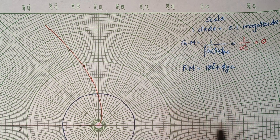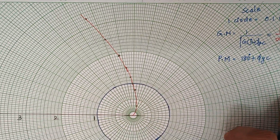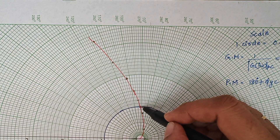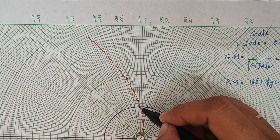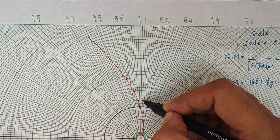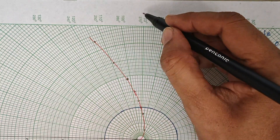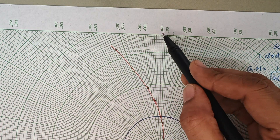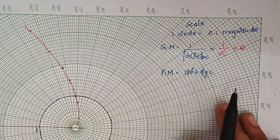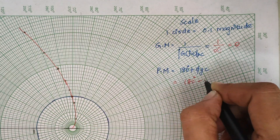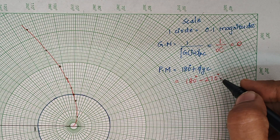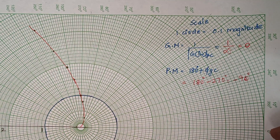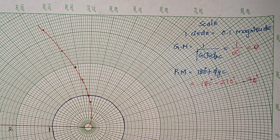To find the phase margin: there is a point where our plot meets the unity circle. At this point, measure the angle exactly — you can directly see it is 270 degrees. The angle shown in smaller size represents a negative angle, so it is minus 270. The phase margin is 180 minus 270, which gives minus 90 degrees. That is all — the problem is complete. Hope you understand. If you have any doubt, let me know in the comment section. Thank you.